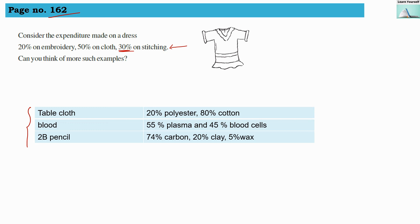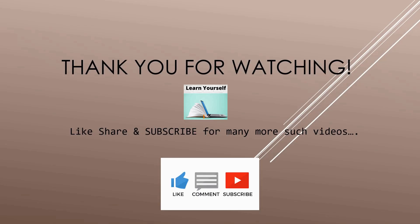Any kind of comparison you can write, but that comparison has to be in percentage. So table cloth is made up of 20% of polyester and 80% of cotton. Our blood is made up of 55% of plasma and 45% of blood cells. And our 2B pencils lead is made up of 74% carbon, 20% clay, and 5% wax. So these are the percentage comparisons. You can write your own examples.